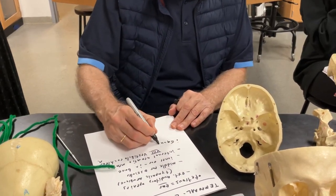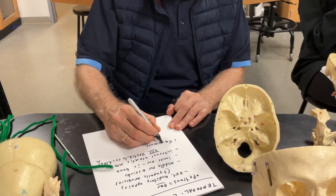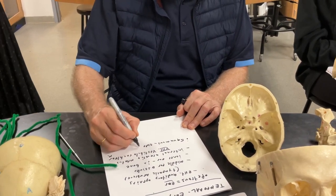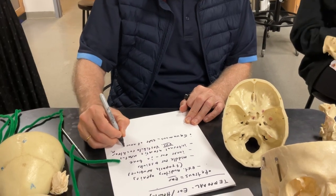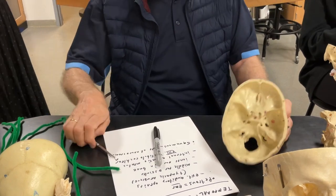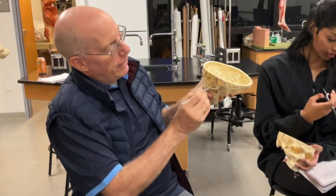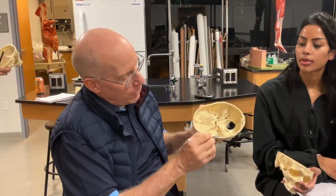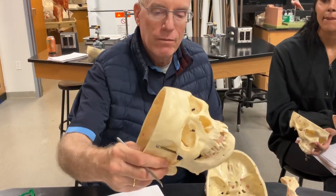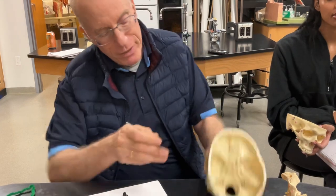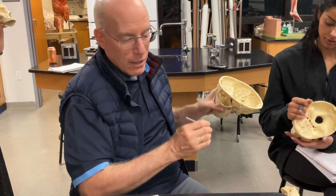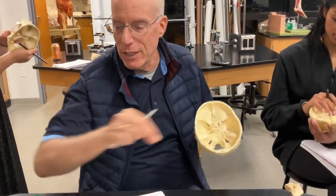We also have the squamous part, which forms part of the side of the neurocranium. When you're looking at the side of the neurocranium, if you follow that petrous part out, you get the side wall of the skull — that's the petrous. Here's the squamous part of the temporal bone.